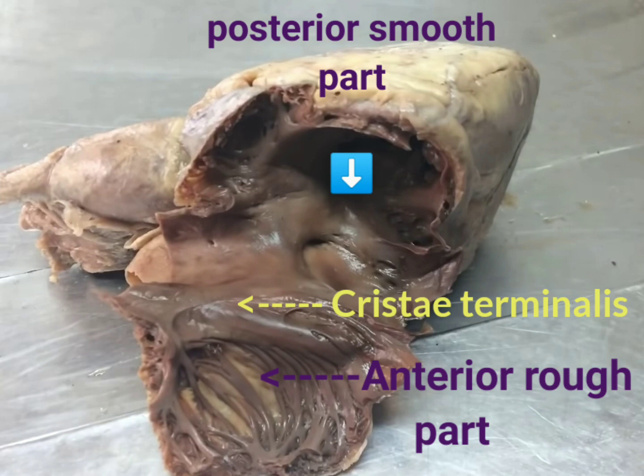The anterior rough part is also called the atrium proper and it is a true atrium. There are muscular ridges formed from the musculi pectinati from the primitive atrium. The arrangement of pectinate muscles is the reason for the rough appearance of the anterior part, and there are more pectinate muscles present in the right auricle, which is the ear-shaped projection of the right atrium.